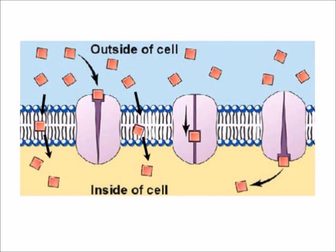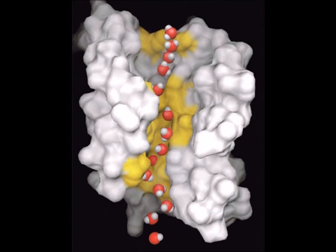This is a little diagram, a computer model, of what we think aquaporin looks like. As you can see, water molecules just pass through the centre of the protein, and can move in both directions, but the net movement is from high concentration to low.